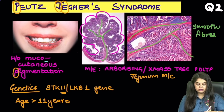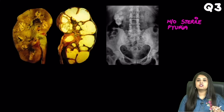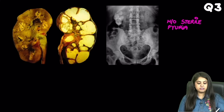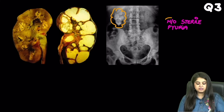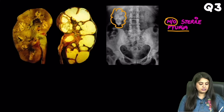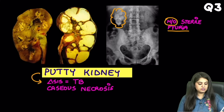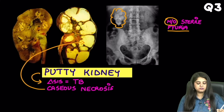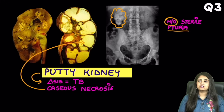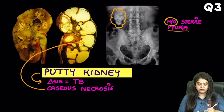Moving on to question 3, which has come again and again in FMG and NEAT: this kidney picture. Usually radiology comes, but the gross appearance can also come. There is always a history of sterile pyuria — pus cells in the urine. This is a case of putty kidney, seen in TB, and the classical finding of cheesy appearance shown here is caseous necrosis. Every question on TB is very important.